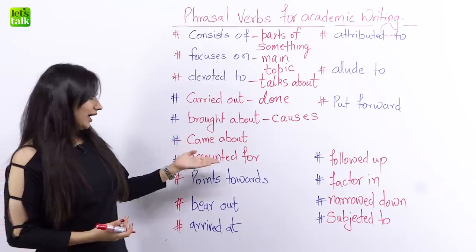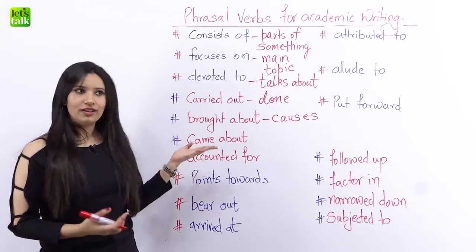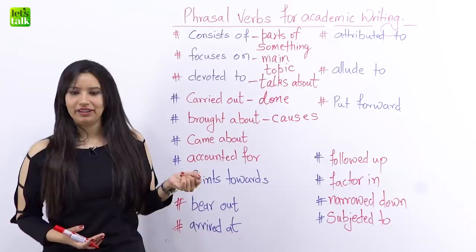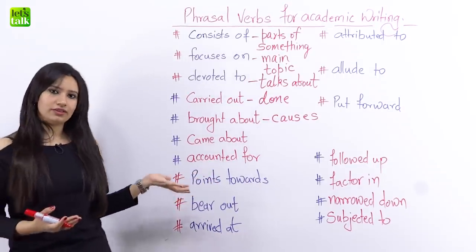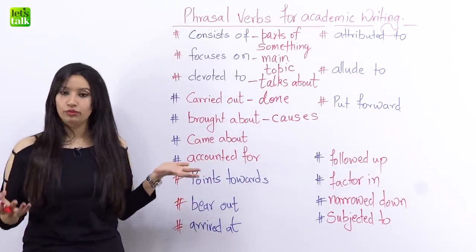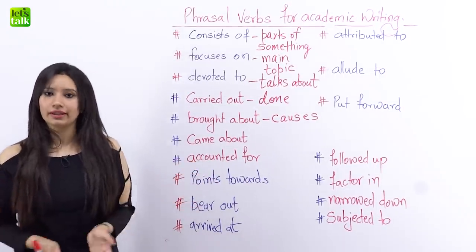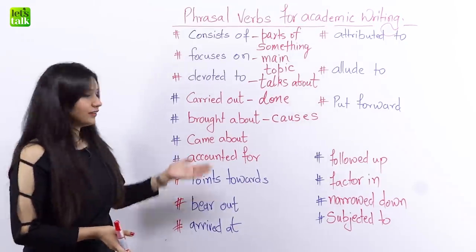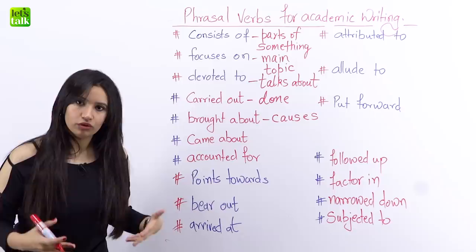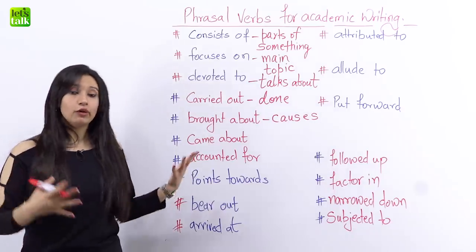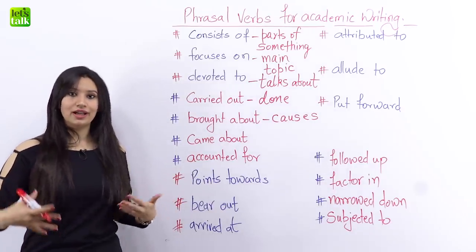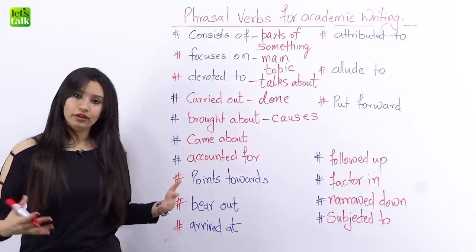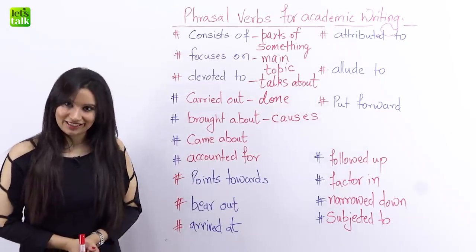The next one we have is 'came about.' So 'came about' means something that happened. You can often use this to talk about discoveries, which you very often mention while writing an essay, article, or report. You say that the discovery came about suddenly, or the discovery came about in 1960 — which means that the discovery happened in 1960.